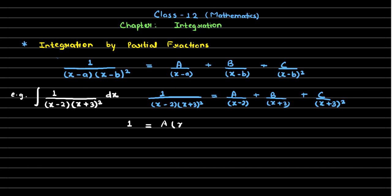Taking the LCM on both sides, we get: A times (x plus 3) squared plus B times (x minus 2)(x plus 3) plus C times (x minus 2). This is what we have after taking the LCM. Now we need to solve this to get the values of the three unknowns A, B, and C.